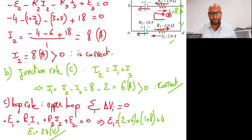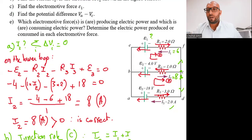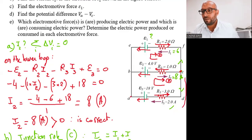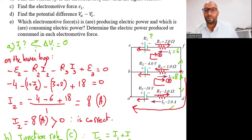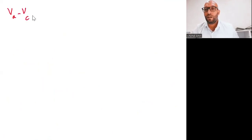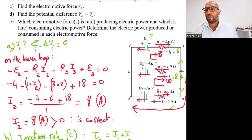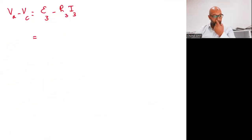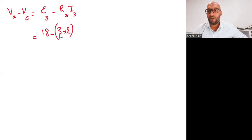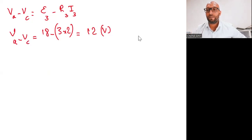In the next part, we need to find the potential difference VA minus VC. Point C and point A are identified in the circuit. Going from C to A through the branch with epsilon 3 and R3: VA minus VC equals epsilon 3 minus R3·I3, which is 18 minus 3 times 2, giving 18 minus 6 equals 12 volts.